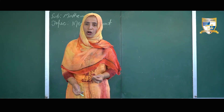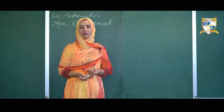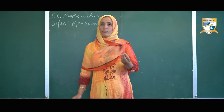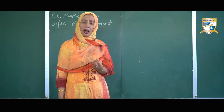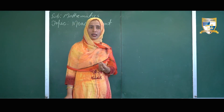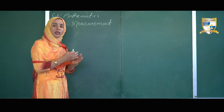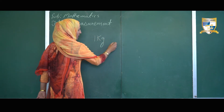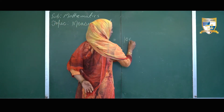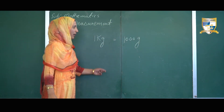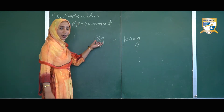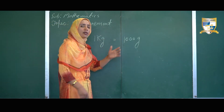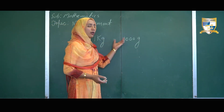To measure the weight of lighter objects like gold, silver, saffron, and needle pins, we use units like centigrams, milligrams, and grams. Grams is considered to be the lower unit of weight. In this video we will discuss about kilograms and grams. Let us understand the relation between these units: 1 kilogram is equal to 1000 grams. We can convert kilograms into grams simply by multiplication and grams into kilograms simply by division.